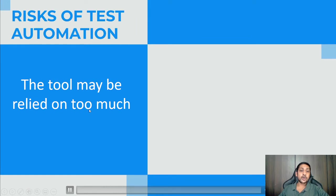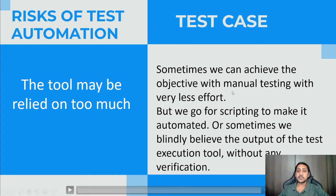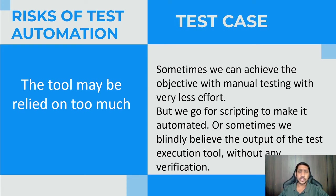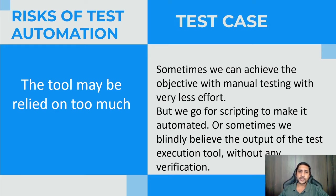The tool may be relied on too much. We have an automated tool and it is consistent, but that does not mean we rely blindly on it. Sometimes we can achieve the objective with manual testing with very less effort, but instead we go for scripting to automate it. Also, sometimes we blindly believe the output of the test execution tool without any verification — if it says pass, we assume it is right — but we also have to check whether the test environment is correct.